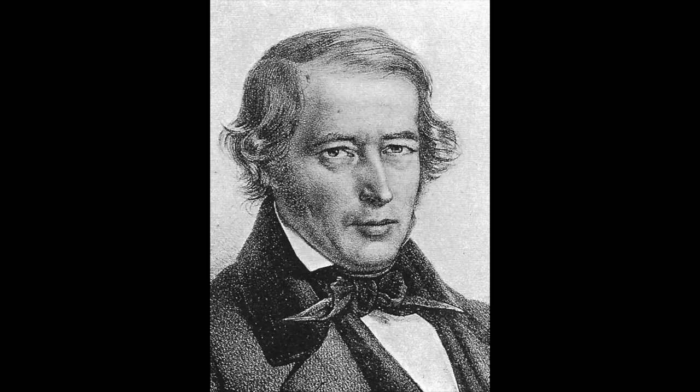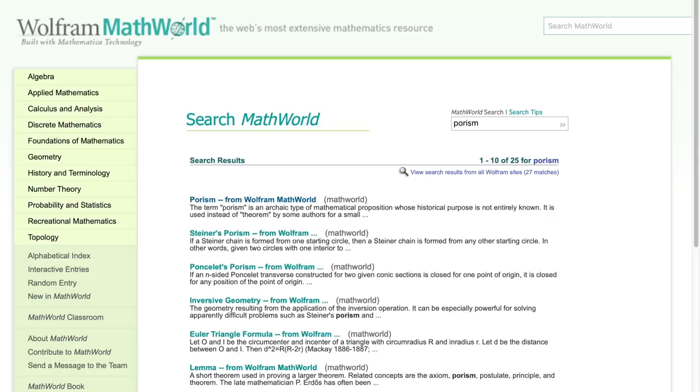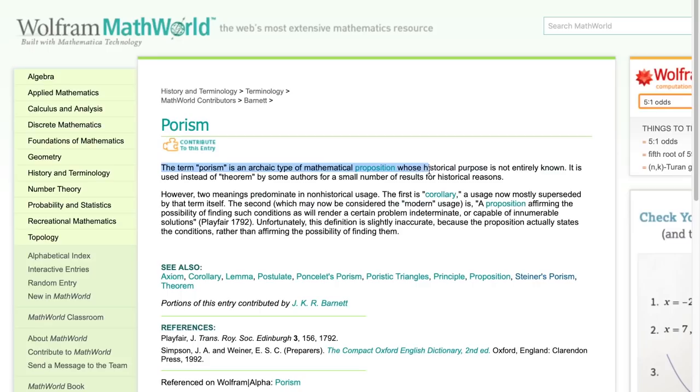For context, Jacob Steiner was a 19th century Swiss mathematician, and a Porism is an archaic term for a proposition.